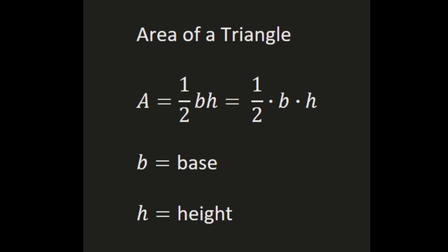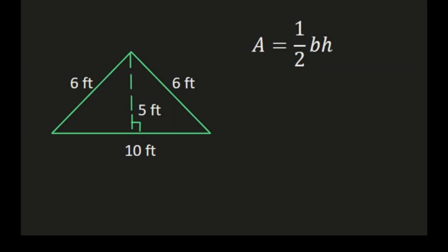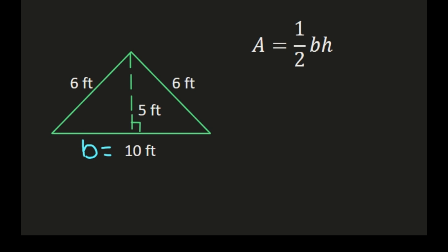Let's take a look at our examples. In this first example, I have an isosceles triangle that is 6 by 6 by 10, and we're going to use the formula area equals one-half times the base times the height. So I'm going to want to label my base and my height. My base is 10 feet. And the height goes from the vertex across from your base — it's the perpendicular line to the base — shown here with a dashed line. So my height in this triangle is 5 feet.